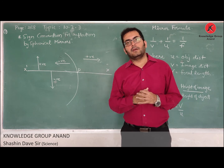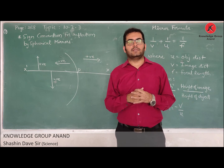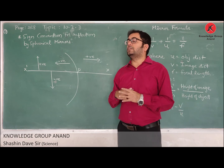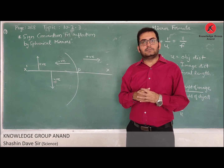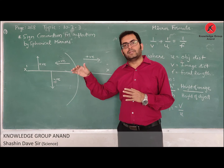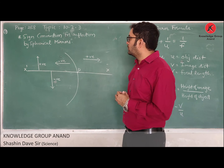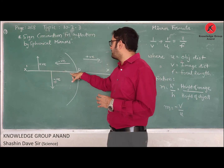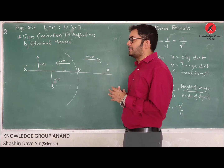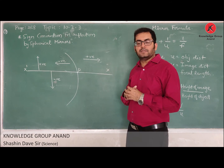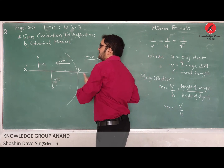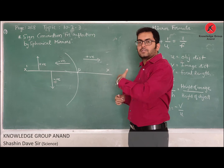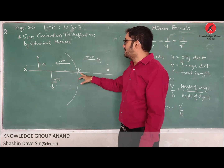This Cartesian sign convention informs us when a distance is measured as positive and when it is considered as negative. It also tells us when height is to be considered positive and when it is to be considered negative. The imaginary line passing through pole P is also known as the principal axis.